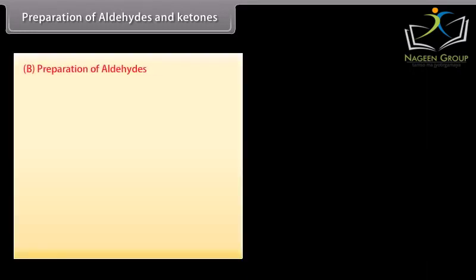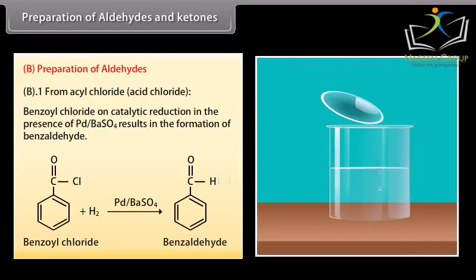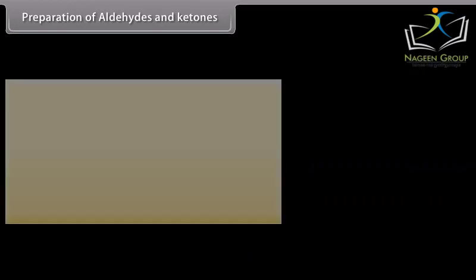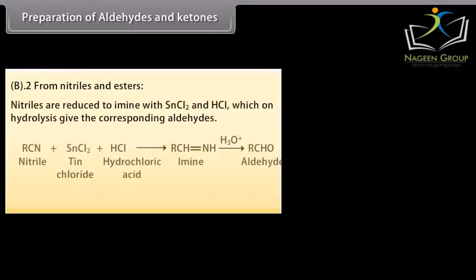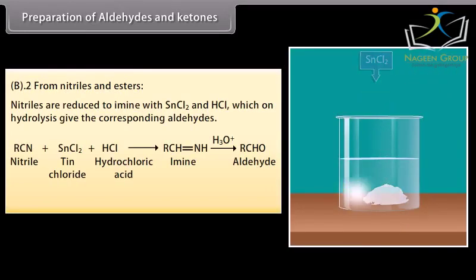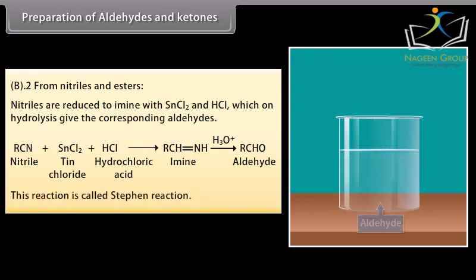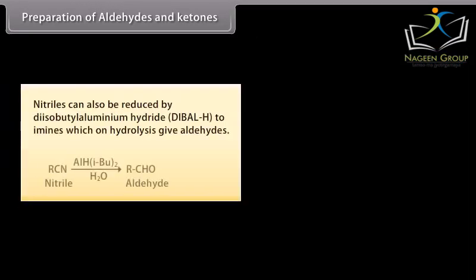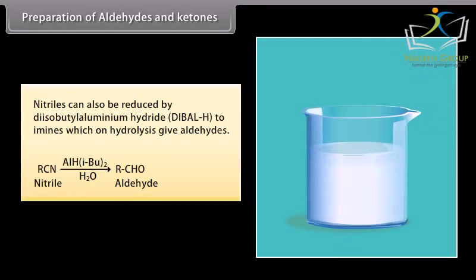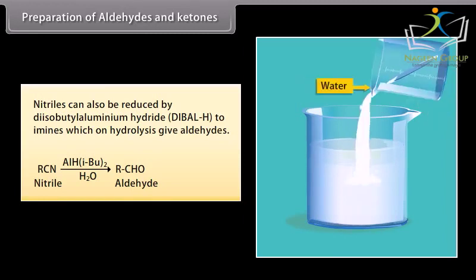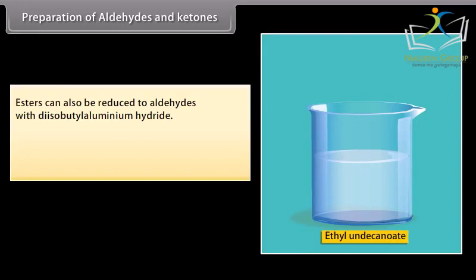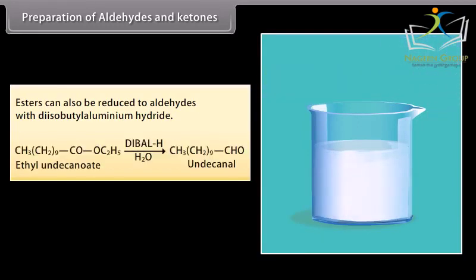Preparation of aldehydes. From acyl chlorides: benzoyl chloride on catalytic reduction in the presence of palladium on barium sulfate results in the formation of benzaldehyde. From nitriles and esters: nitriles are reduced to imine with tin chloride and hydrochloric acid, which on hydrolysis give the corresponding aldehydes — this reaction is called the Stephen reaction. Nitriles can also be reduced by diisobutylaluminium hydride to imine, which on hydrolysis give aldehydes. Esters can also be reduced to aldehydes with diisobutylaluminium hydride.